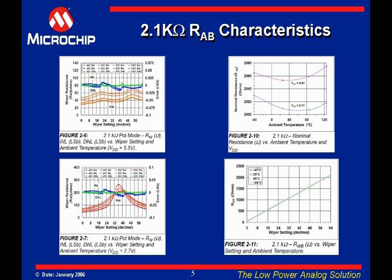The top right graph shows the effects of voltage and temperature on the RAB resistance — notice that the change in R is minimal. The bottom right graph shows the monotonic nature of the device.